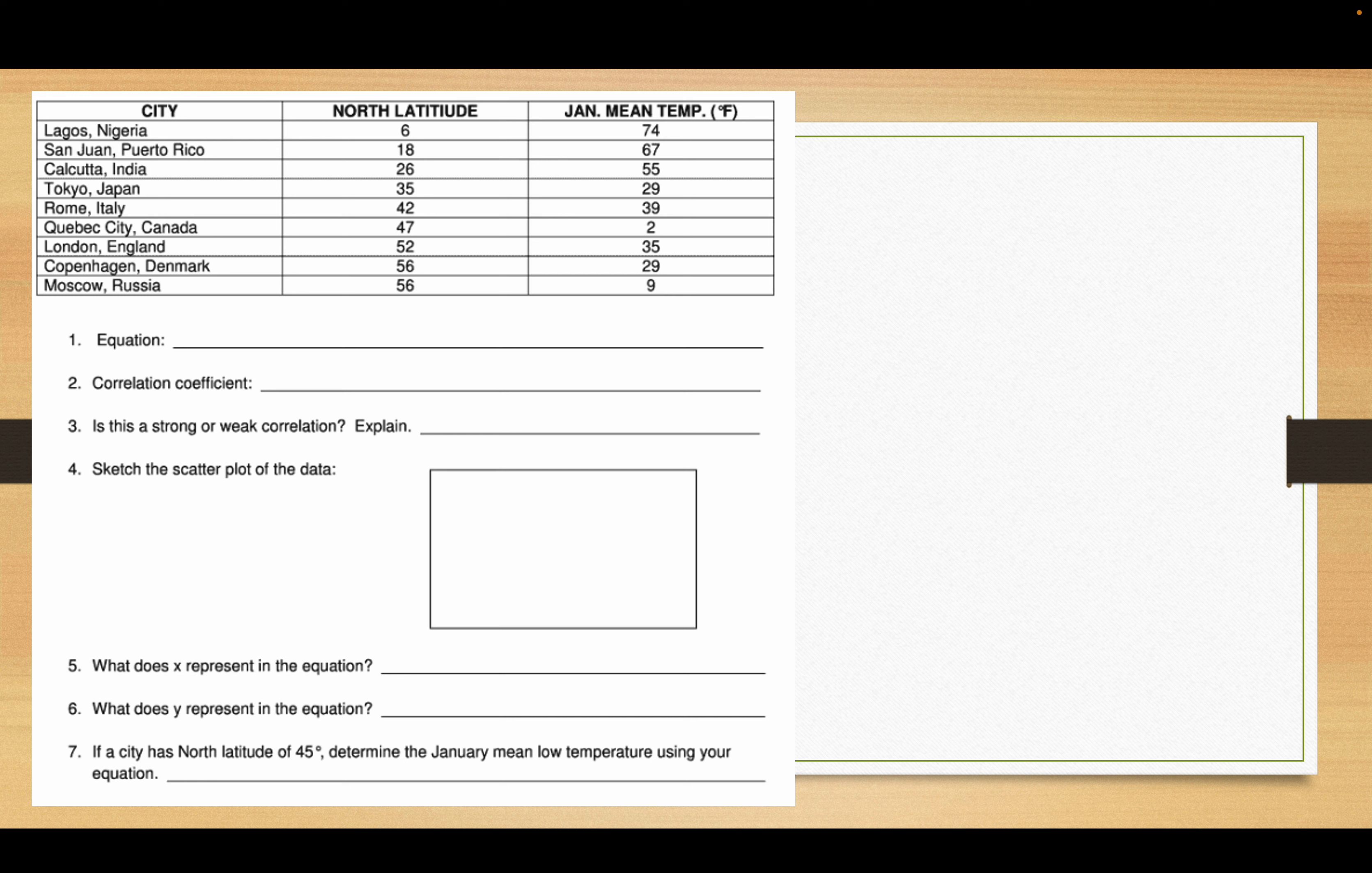Now you go over to the y column and it'll automatically jump you right up to the top. 74 enter, 67 enter, 55 enter, 29 enter, 39 enter, 39 enter, 2 enter, 35 enter, 29 enter, 9 enter. Make sure just real quick that both columns are the same length, you didn't miss anything.